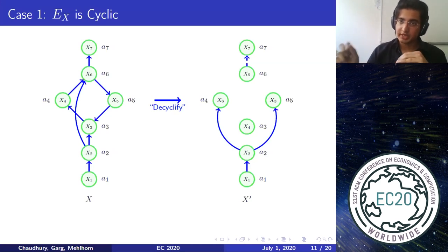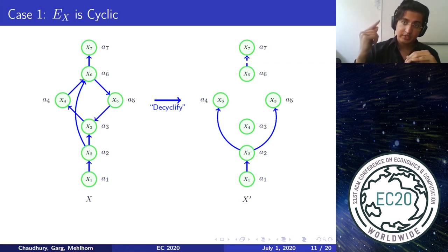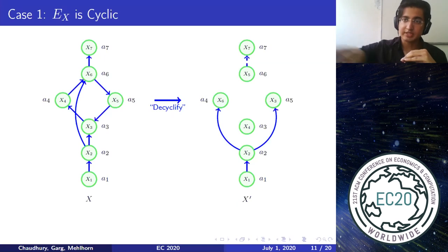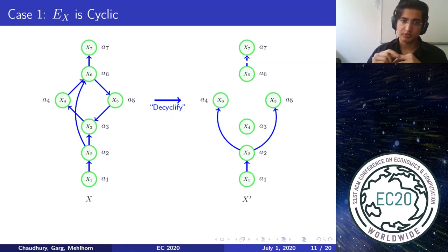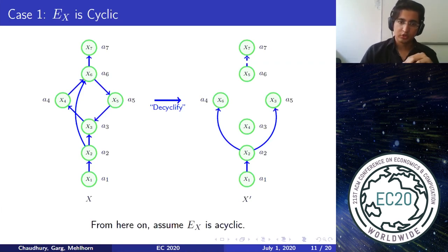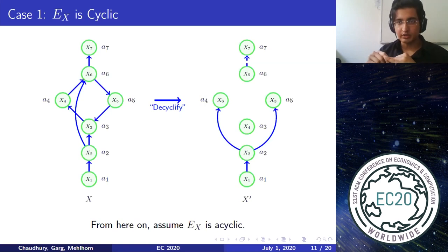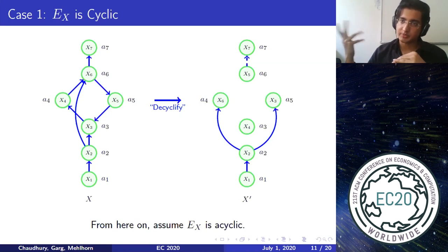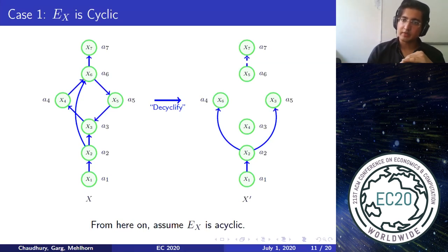Notice that we haven't changed the bundles themselves — the bundles remain X1 to Xn. We have just changed the owners, and every agent is at least as happy as before. So if an agent didn't envy any other bundle before, they won't envy any other bundle now. This is crucial: envy depends on the bundle, not the owner. Going forward, we assume the envy graph is acyclic, because whenever it's cyclic we have an update rule yielding a Pareto dominating partial EFX allocation.